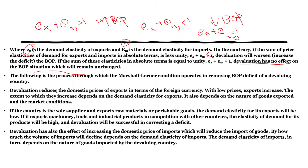The process through which the Marshall-Lerner condition operates in removing the balance of payment deficit of a devaluating country works as follows. Devaluation reduces the domestic prices of exports in terms of foreign currency. For example, if 1 dollar equals 76 rupees, this reduces the price of Indian exports in foreign currency terms.